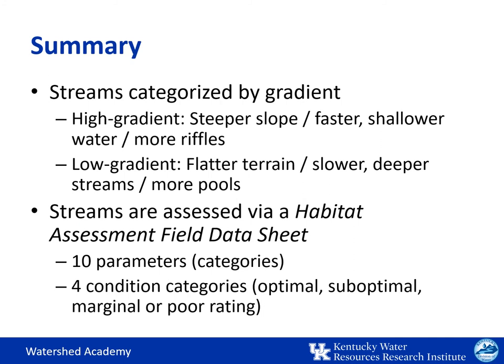In summary, streams in Kentucky are categorized by gradient, with higher gradient streams found in steeper terrain having faster, shallower water flows with more riffle areas, and lower gradient streams found in flatter terrain mainly in western Kentucky having slower, deeper flows with more pool habitat. Once you know the type of stream gradient you have, you'll use the habitat assessment field data sheet to evaluate 10 habitat parameters, rating each from poor to marginal, suboptimal, to optimal. In the end, you'll come up with an overall habitat score that will help you understand how well the stream can support aquatic life and where weaknesses are that may need to be targeted in stream improvements.